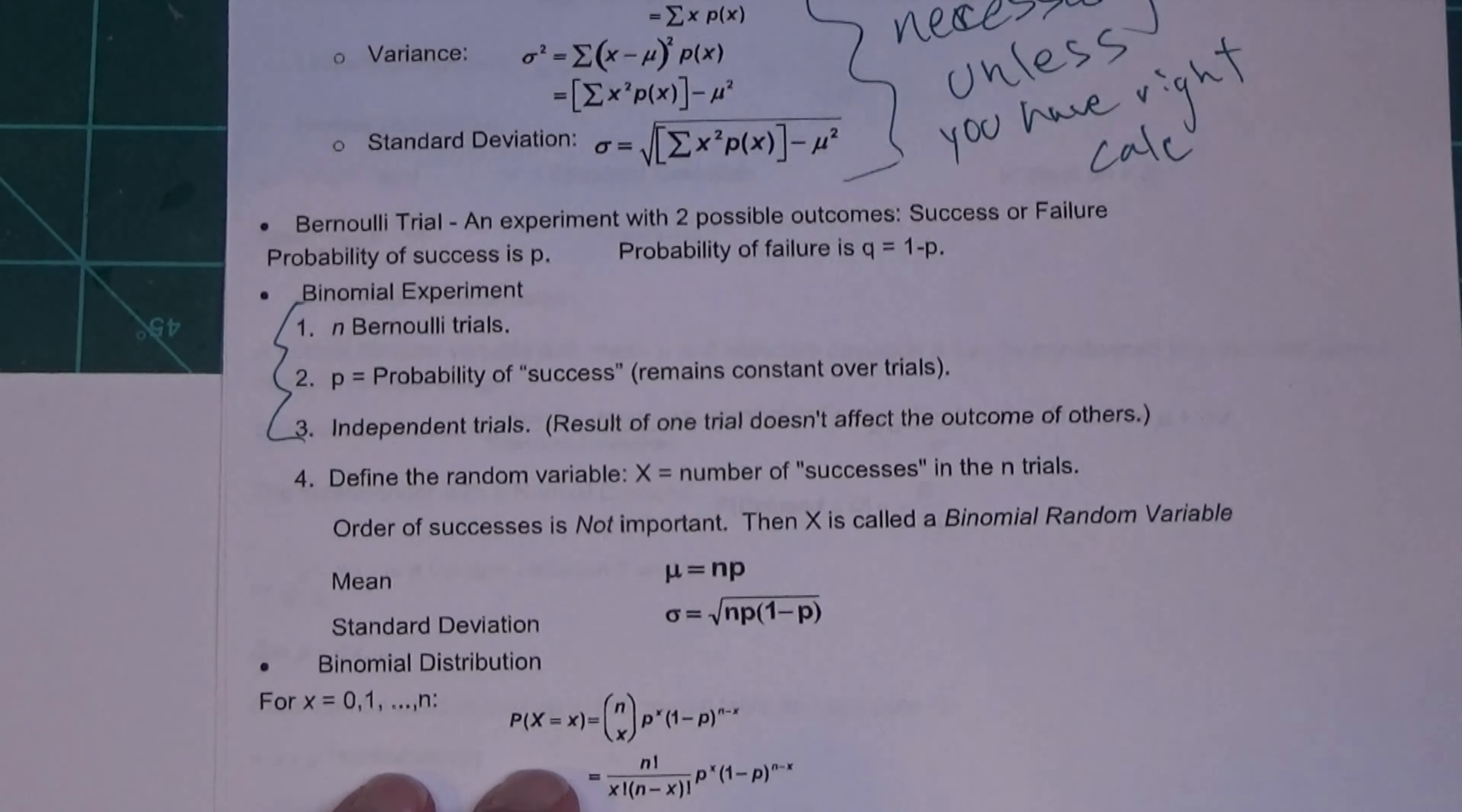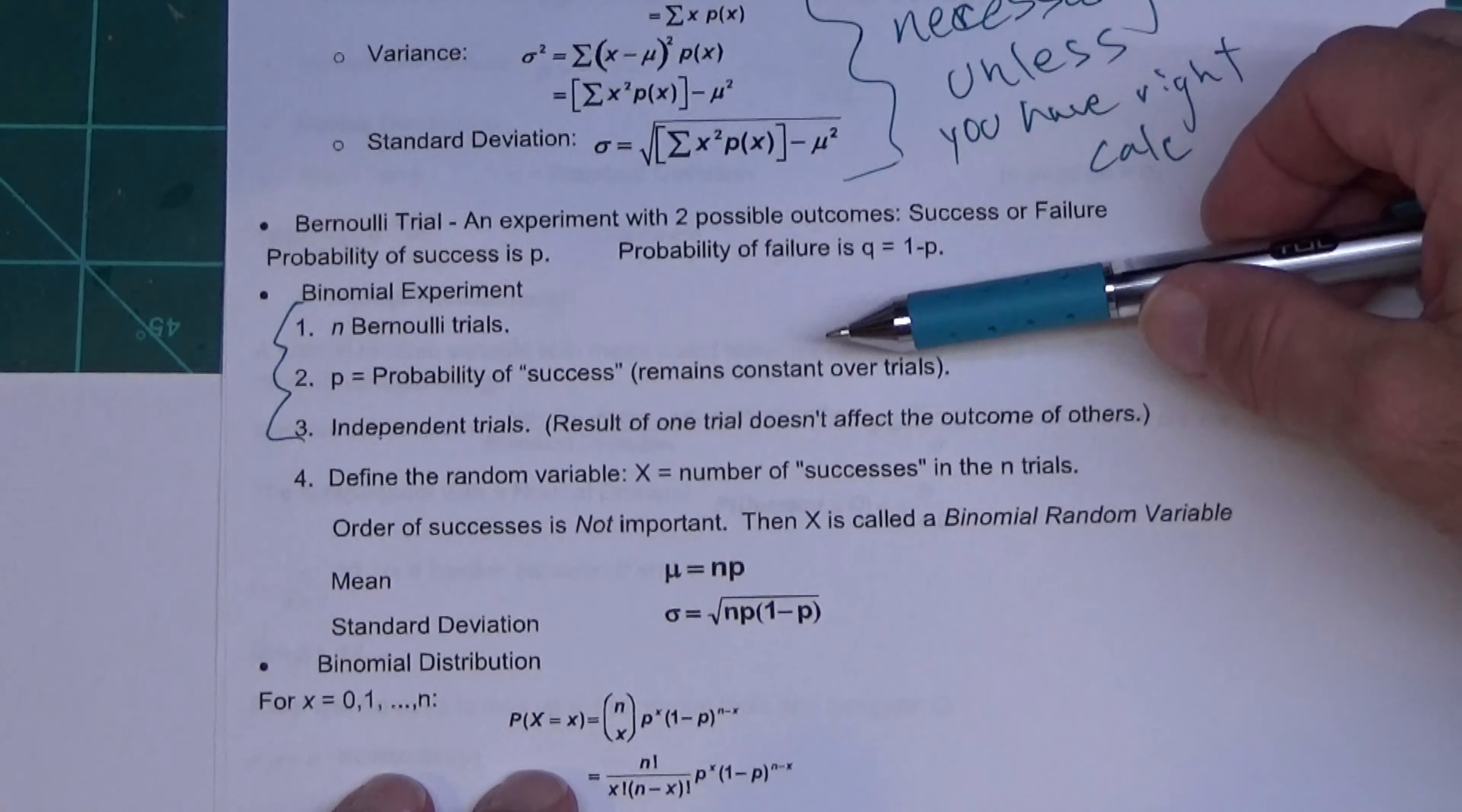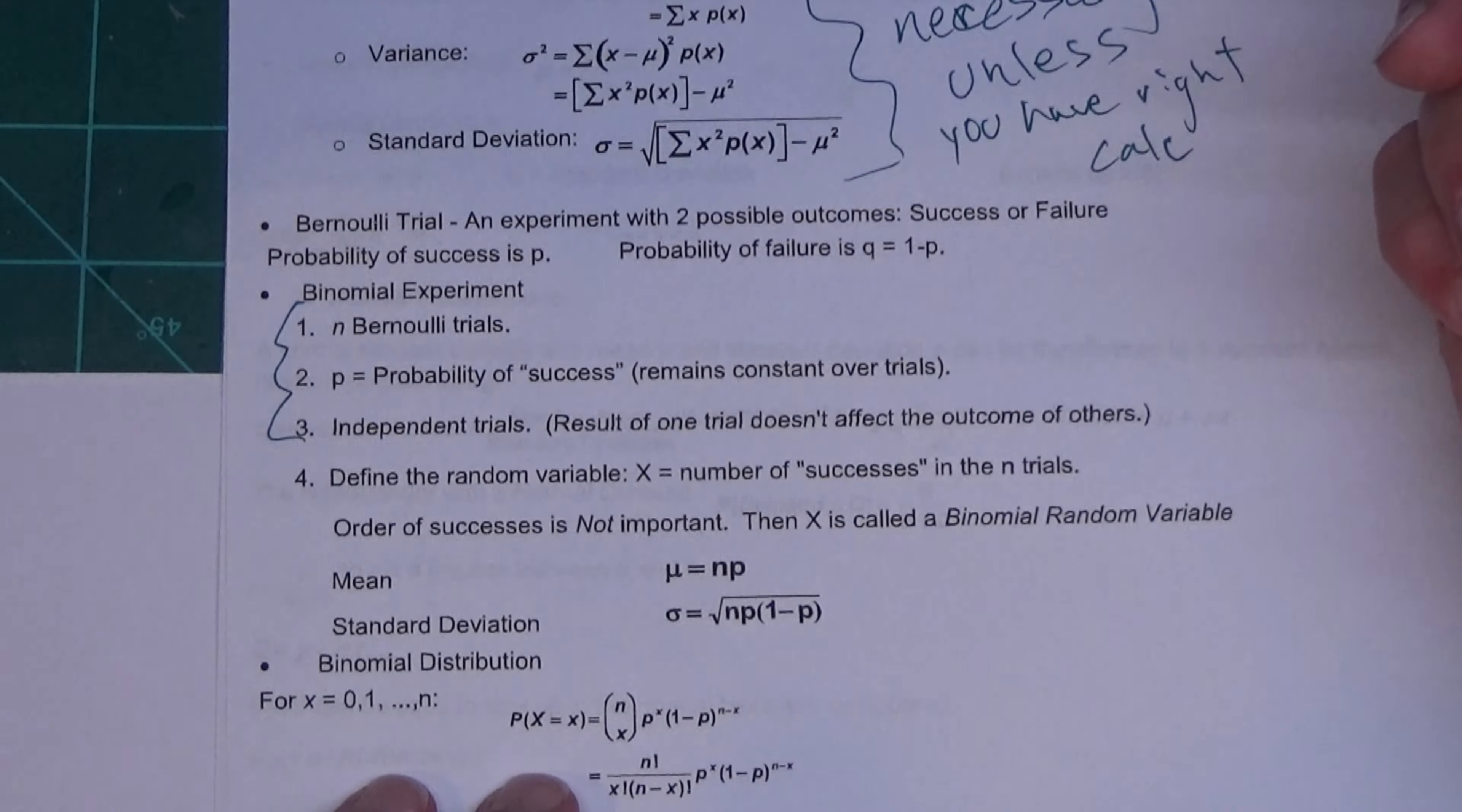She gives the three conditions—the three common conditions right here for a binomial—but they're not spelled out very clearly. I like: you have a success or failure, you have a fixed number of trials, the probability is constant, and the trials are independent. Those are the four.